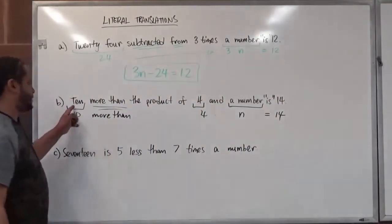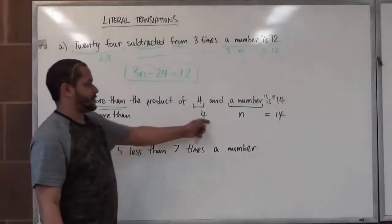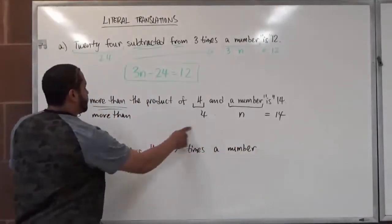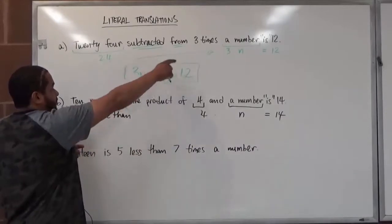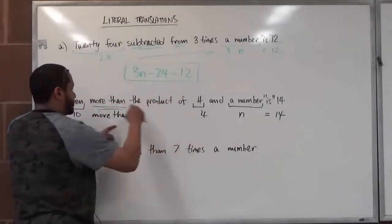Since we have a post-operation here for '10 more than,' 4 times n is 14, we want to swap these two around. Because any time we see the post-operation of 'more than,' 'less than,' or 'subtracted from,' the two terms switch order.